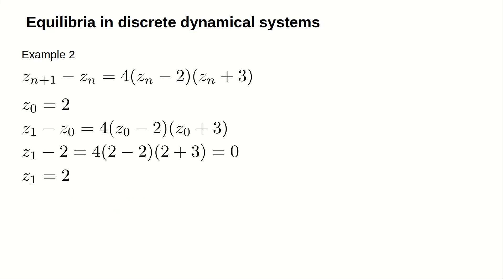We started at 2 and we stayed at 2. z sub n equals 2 is an equilibrium of the dynamical system.